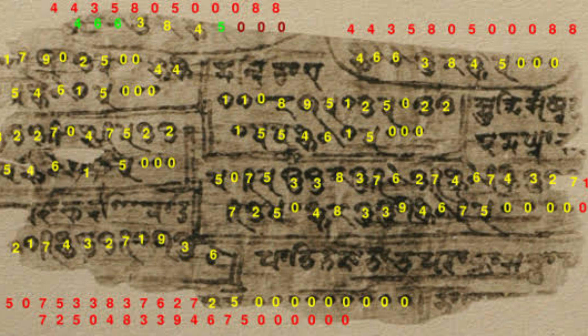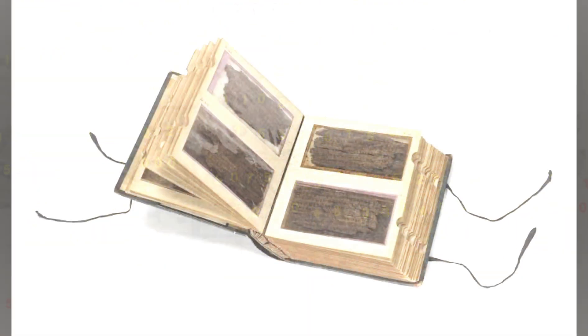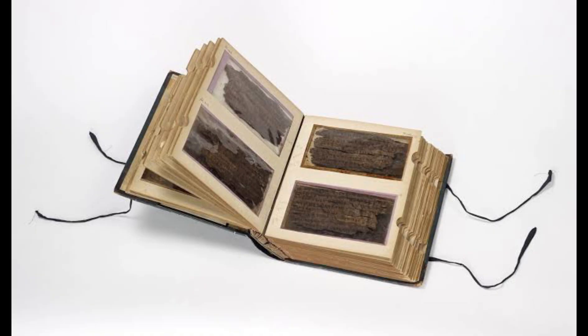The extant manuscript is incomplete, consisting of 70 leaves of birch bark, whose intended order is not known. It is kept at the Bodleian Library at the University of Oxford, though folios are periodically loaned to museums.